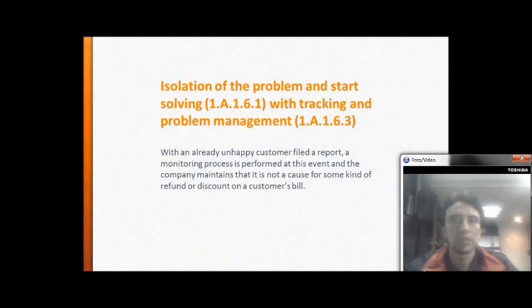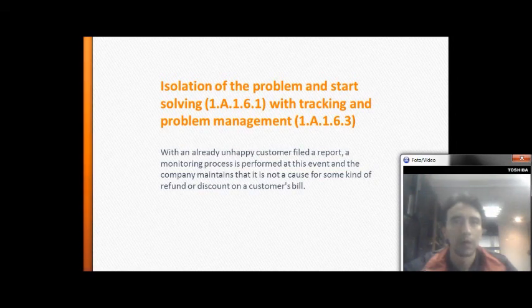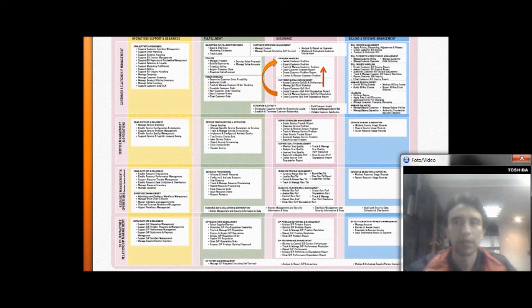Isolation of the problem and problem-solving with tracking and problem management: with an already unhappy customer feedback report, a monitoring process is performed for this event, and the company evaluates whether any key refund or discount applies.